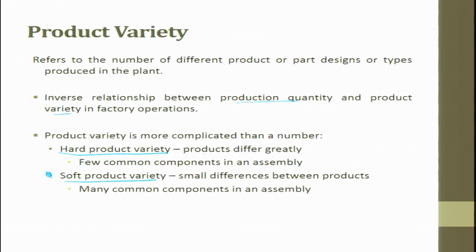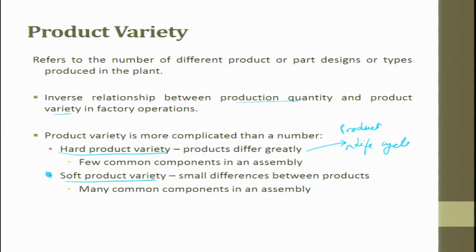For example, different types of pizza fall under soft product variety, while pizza and garlic bread are completely different — that is hard product variety. Soft product variety involves many common components in an assembly; hard product variety uses few common components. This also tries to dictate the product life cycle. For hard product variety, it takes a lot of time to establish the assembly line or machines, whereas soft product variety variations can be done more quickly.